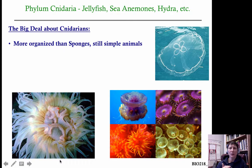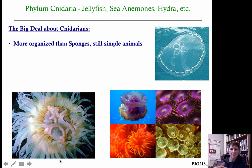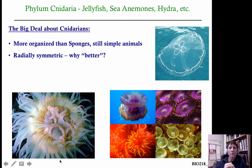They now have organ systems, or they're beginning to have organ systems, and true tissues, whereas we didn't quite see that with the sponges. That allows them to gather nutrients more efficiently and more rapidly, they're better capable of movement, they can respond to their environment more directly, and they have some control over their movement — though it's pretty limited.